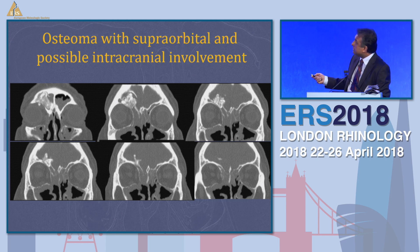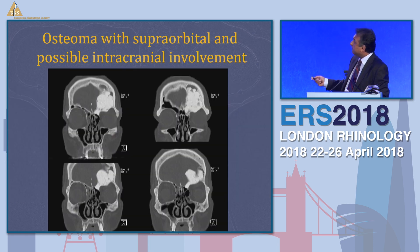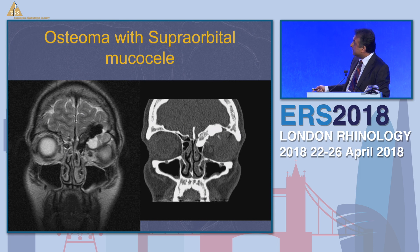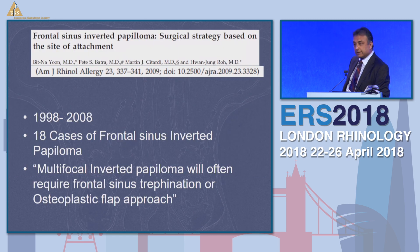When you've got an osteoma that follows backwards with a significant sharp supraorbital component going into the intracranial cavity, I think I would use an external approach. Another very large giant supraorbital osteoma — in my hands I would prefer an external approach. Another example of an individual with a large osteoma and a mucosele lateral to that: to be adequately certain you're going to achieve long-term drainage for that mucosele into the nasal cavity, I feel this would be the right approach.